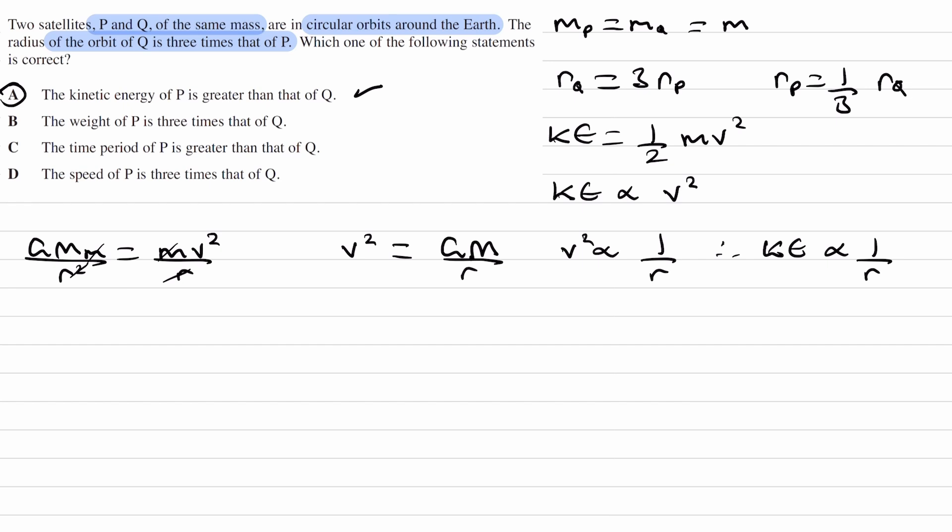A is correct. But let's go through the rest of the options as well, in case you weren't sure about how any of those worked. So we'll go over B next. So the weight of P is 3 times that of Q.